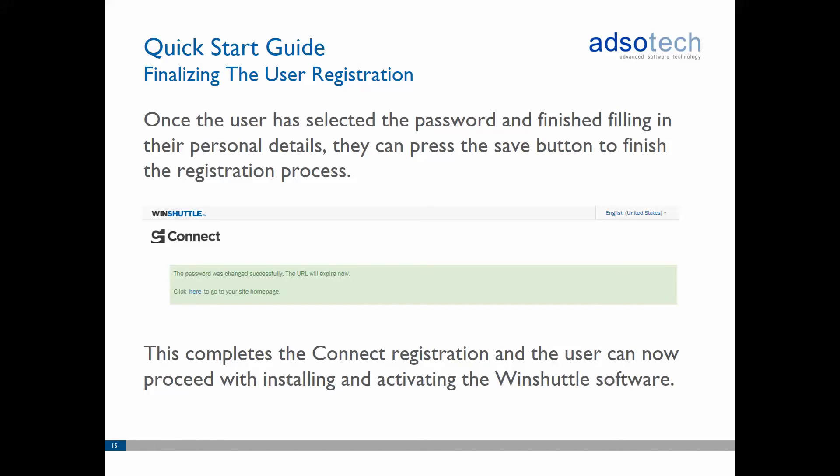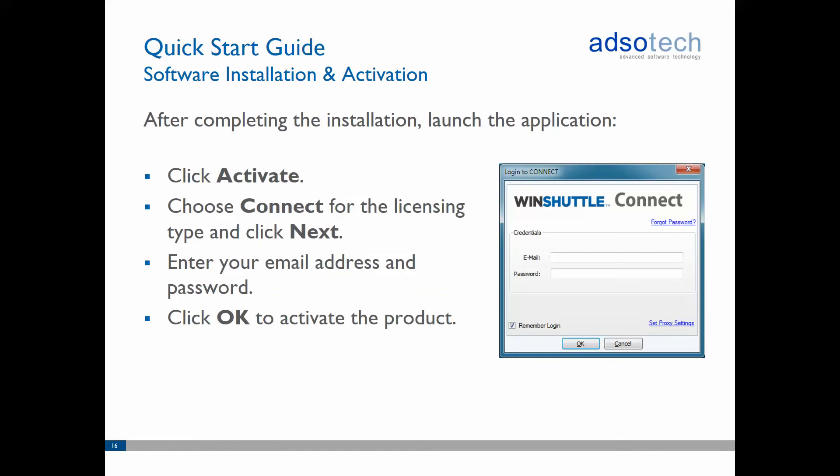The user can now activate the Windshuttle desktop products using their Connect credentials, assuming the admin already assigned a valid software license to the user during account creation. Once the software has been installed and the user launches the Windshuttle application, they will be prompted to activate the product.